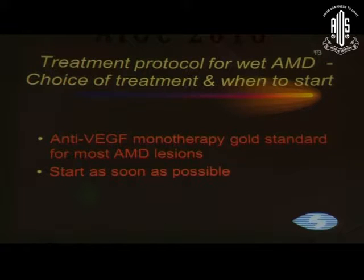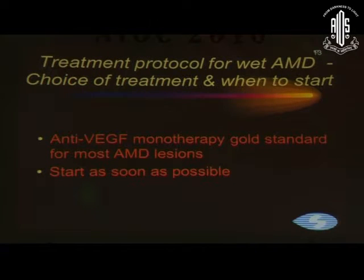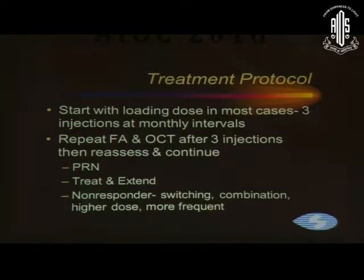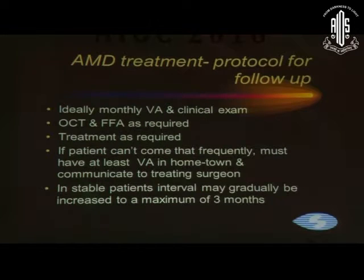Coming on to the treatment protocol: anti-VEGF monotherapy is currently the gold standard for most AMD lesions, and when to start is very clear - as soon as the diagnosis is made. We generally start with a loading dose in most cases, three injections at monthly intervals, then repeat FA and OCT after three injections, reassess, and continue. Treatment could be PRN, treat-and-extend, or as we'll see later, different regimes for non-responders.